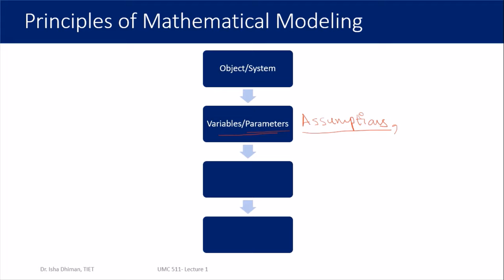For the variables and parameters, we define which parameter effects we want to study. Taking the virus spread example: do you want to study the effect of temperature, the effect of gender bias, or the effect of age groups? Whatever parameter effect you want to study in that particular model, you redefine it here.